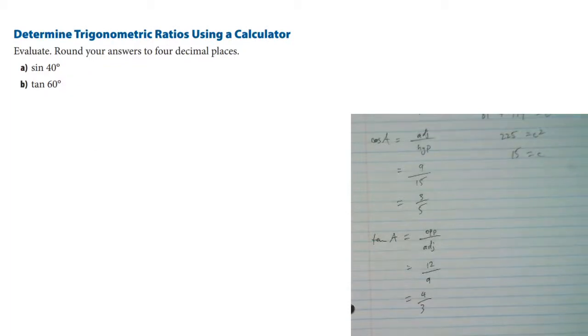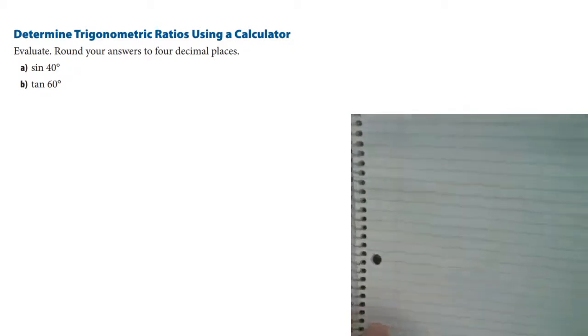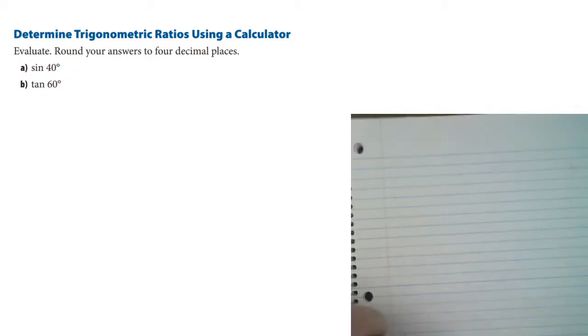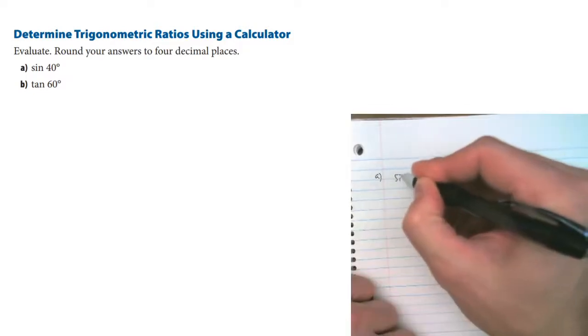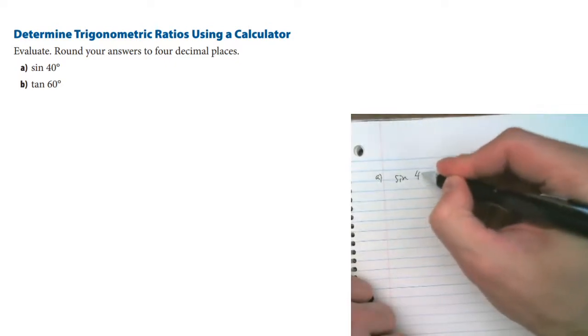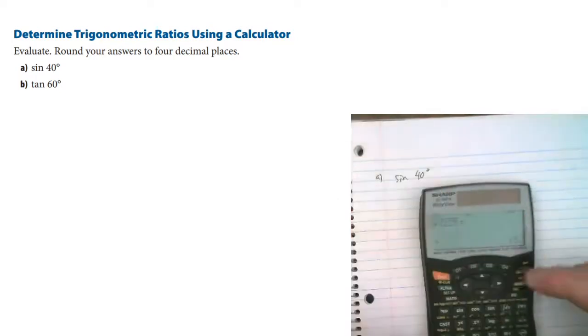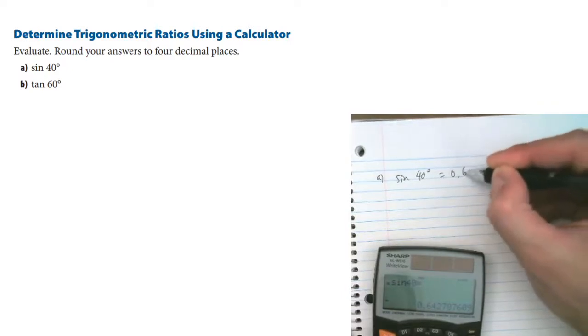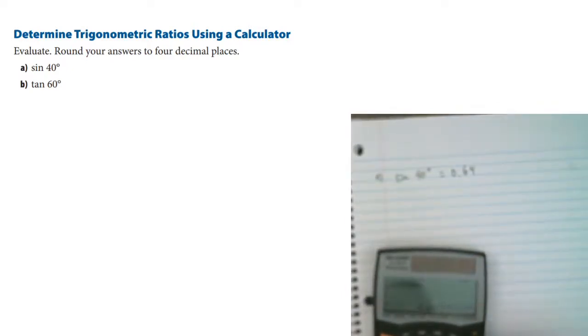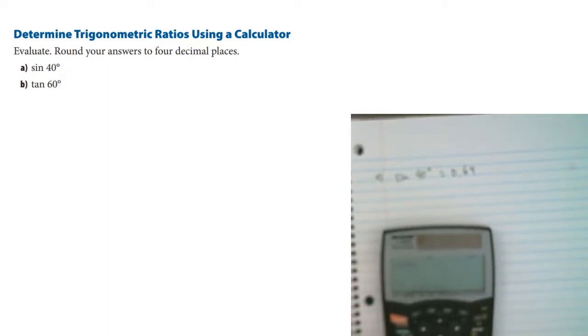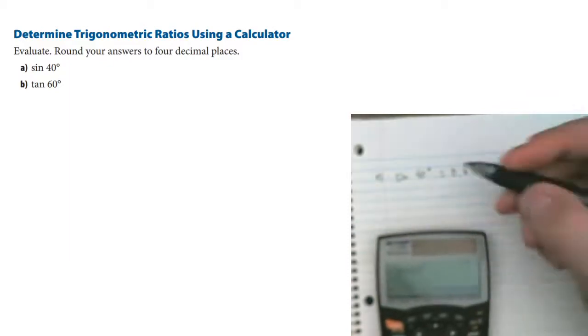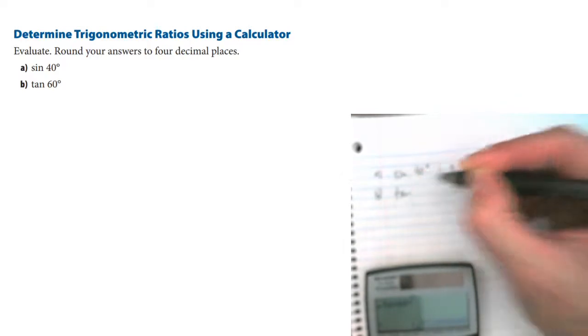Determine trigonometric ratios using a calculator. So the sine of 40 degrees, that's a ratio, that's some fraction. But our calculator will tell us what that is. Notice that I'm in degree mode, and two decimal places will do.